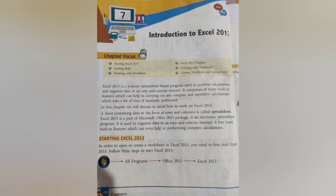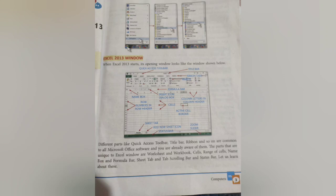Our second topic is starting Excel 2013. How we can start Excel: first, go to the Start button; second, go to All Programs; third, go to Office 2013; then go to Excel 2013 and click it. We can get the Microsoft Excel 2013 window with quick access toolbar, title bar, ribbon, formula bar, sheet tab, tab scrolling bar, workbook, worksheet, range of cells, name box, and status bar.